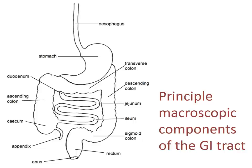Duodenum actually means 12 — it was the first 12 inches of the small intestine using old-fashioned units of length. The middle part of the small intestine is the jejunum, and the final part is the ileum. That takes material into the first part of the large intestine, which has a larger, wider diameter lumen — the cecum.